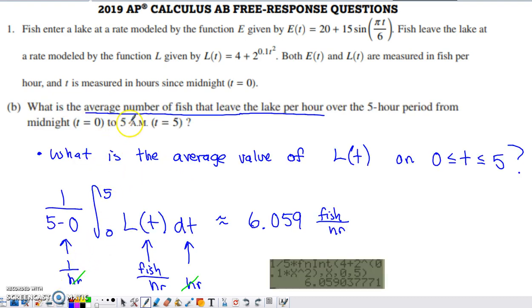Part B asks for the average number of fish that leave the lake per hour over the five-hour period from midnight to 5 a.m. So again, we're dealing with the time frame from time zero to time five. This is essentially asking what the average value of L(t) is on the interval from zero to five. It only pertains to the fish that leave, so we don't need to involve E(t) here, just like we didn't involve L(t) back in part A.